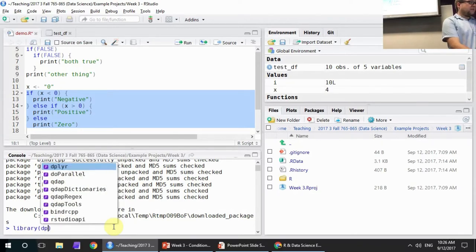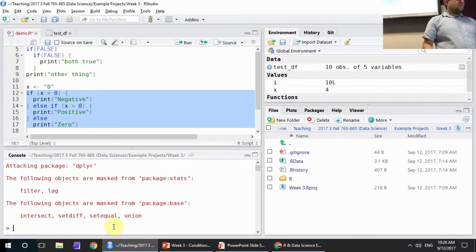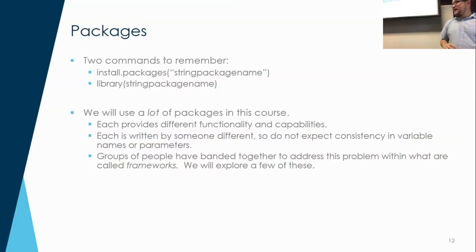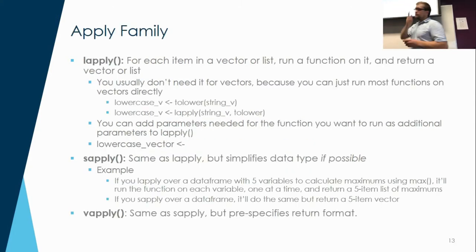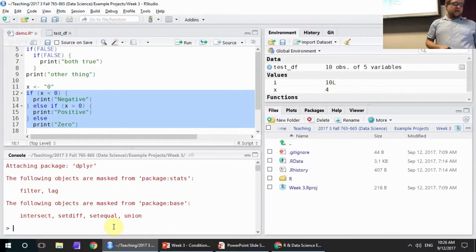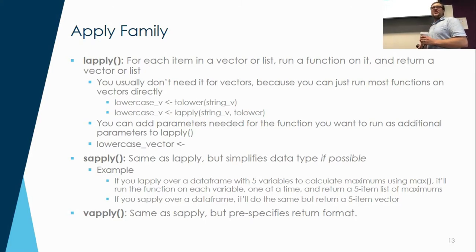Once the package is installed, I still can't access functions inside dplyr unless I use the library function first. So if I do library(dplyr), now I have access to all of the stuff inside dplyr. Now we get to the apply family. The apply family is one of the most R-like aspects of R — it's very uniquely an R thing. In other languages, you don't do it this way.